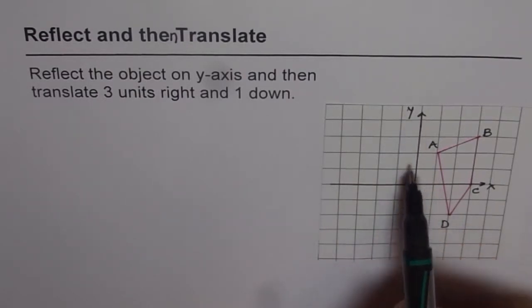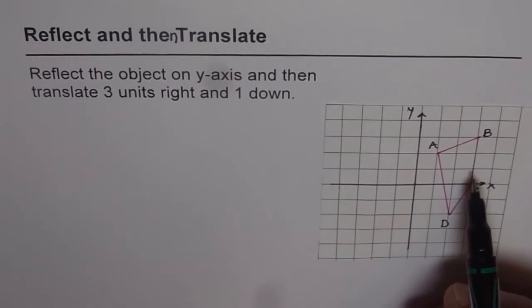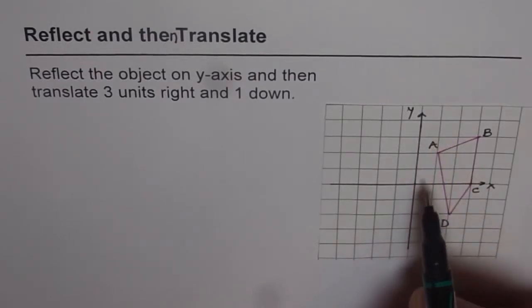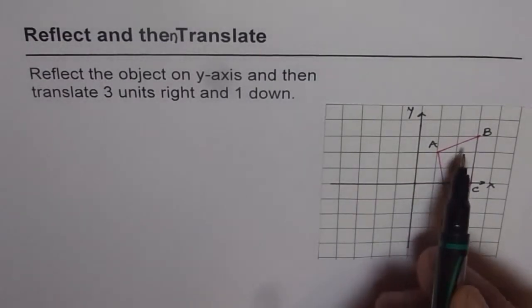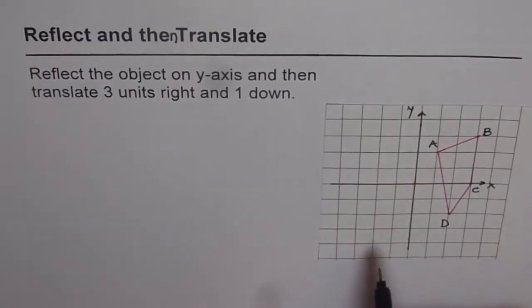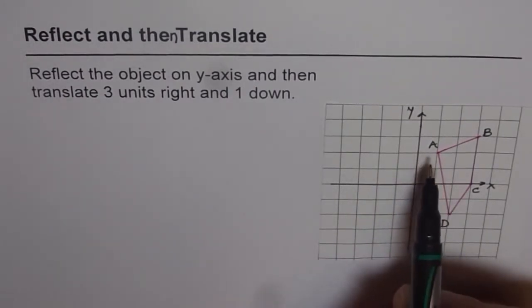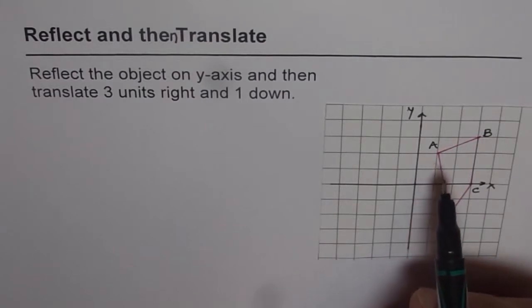So think there is a mirror along the y-axis and the object is on the right side of the mirror. So when it gets reflected, it gets an image on the left side, which will be exactly of the same size but kind of opposite direction. Remember, each point will be same distance away from the mirror.